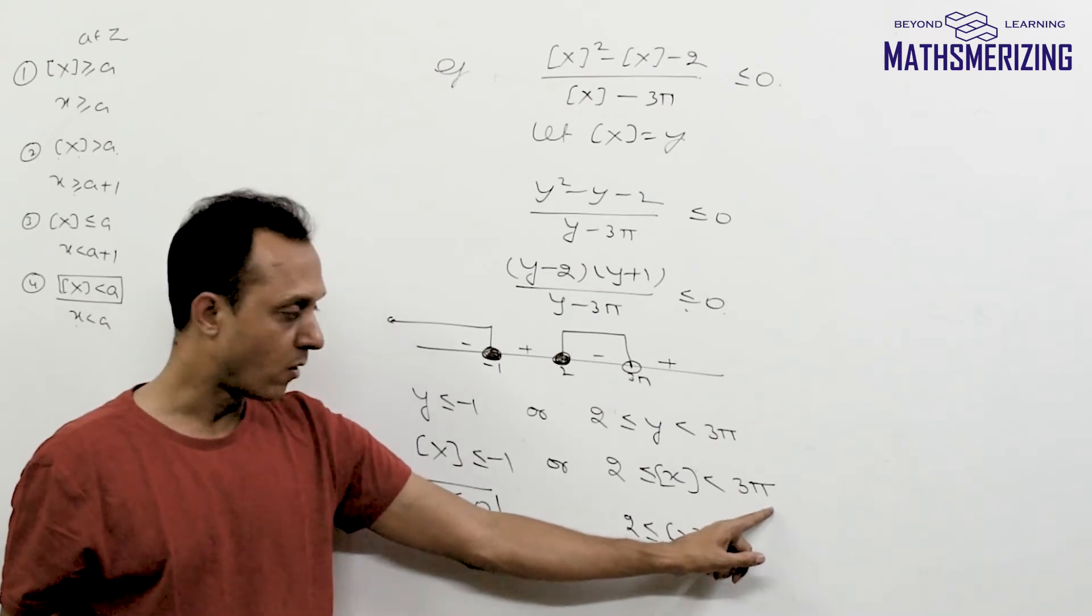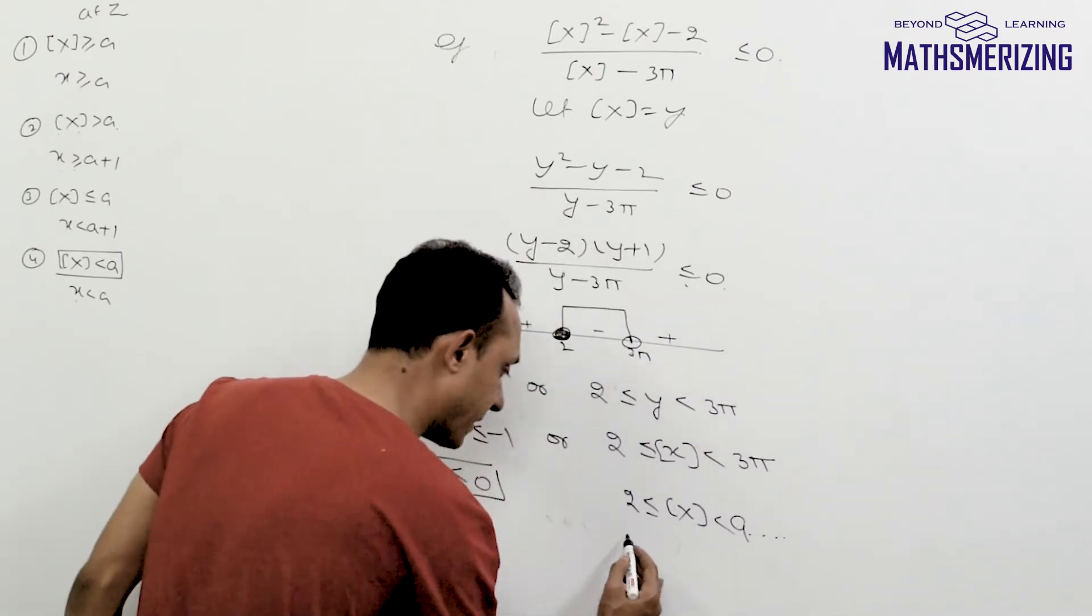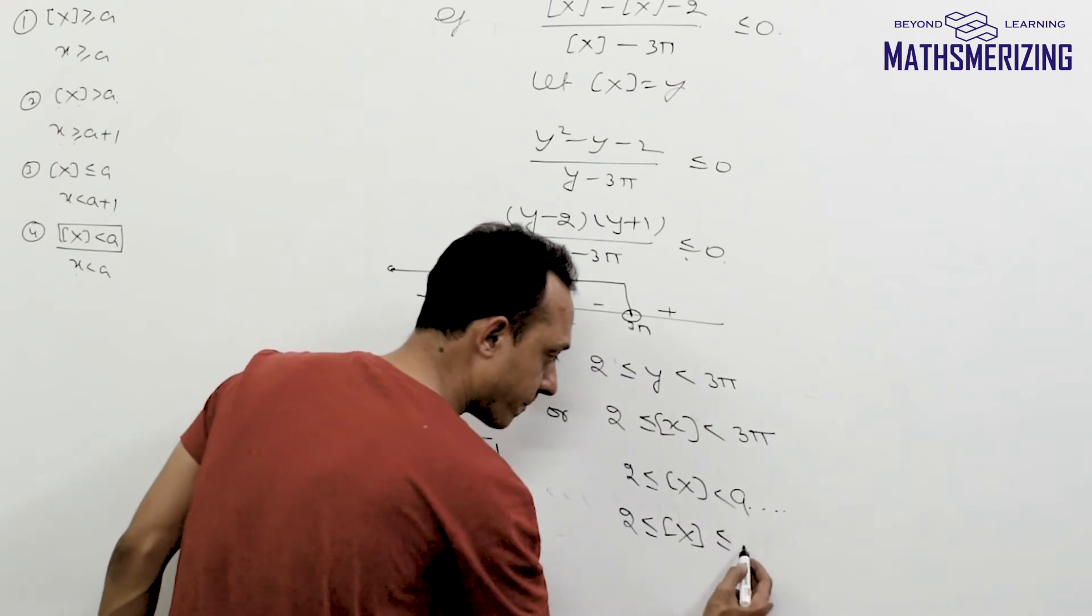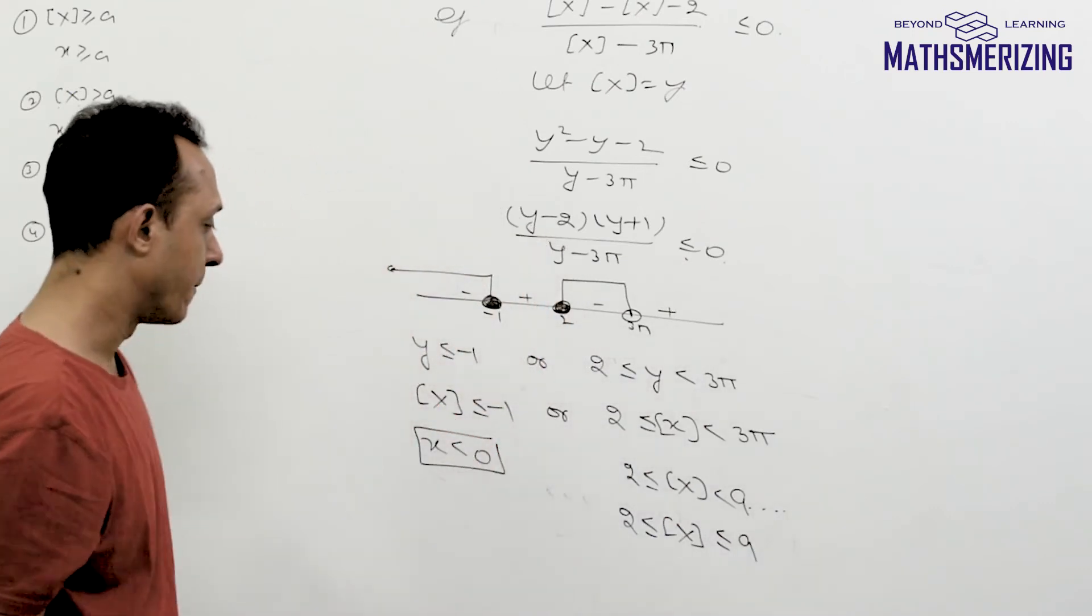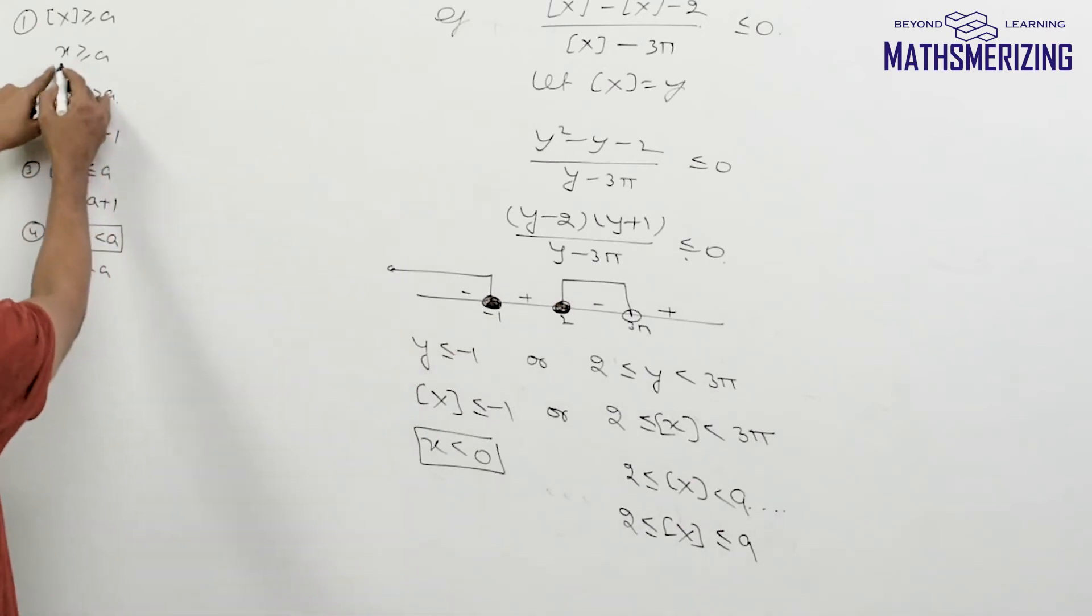3π is 9 point something. Now it cannot take all the values, it can only take integral values. So from here the result I get is the value of greatest integer function of x should be 2 through 9. Now when greatest integer function of x is greater than or equal to a, it is simply x is greater than or equal to a.